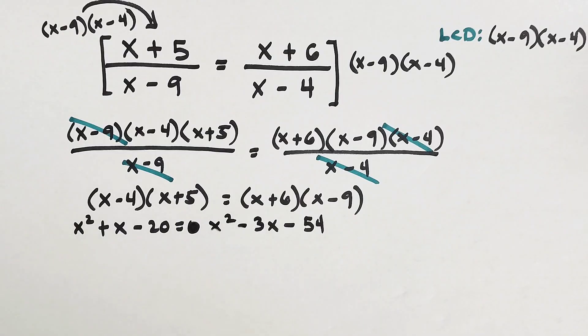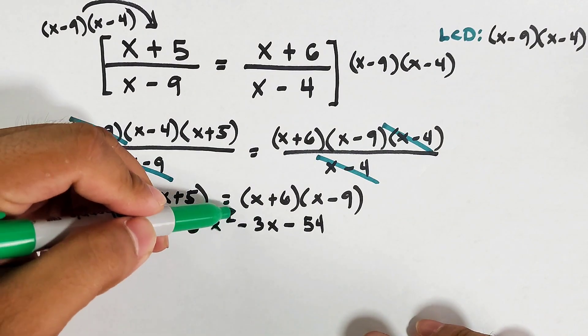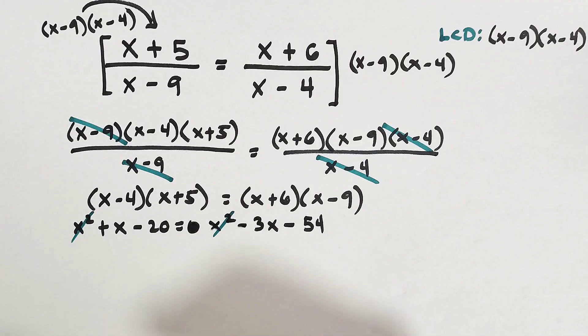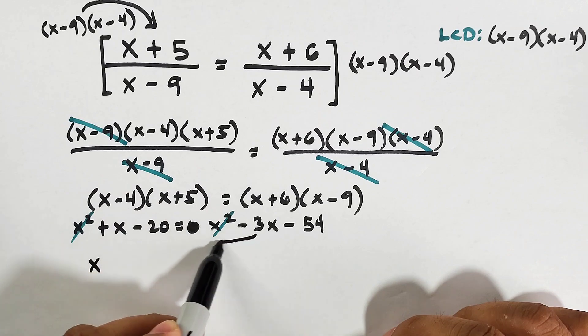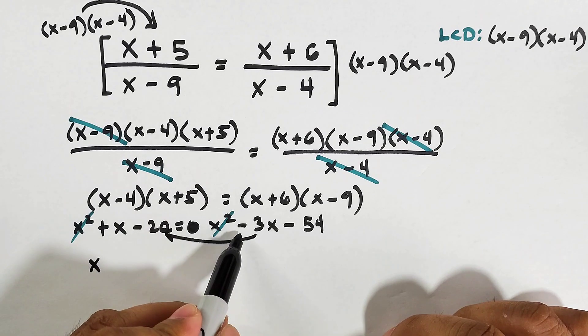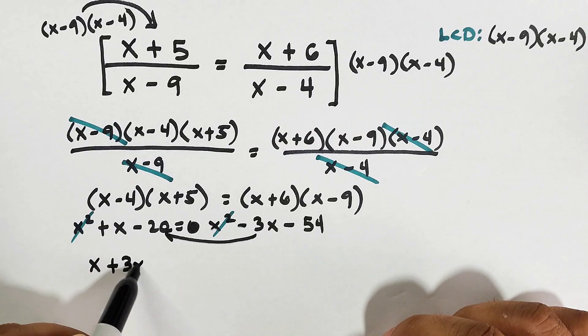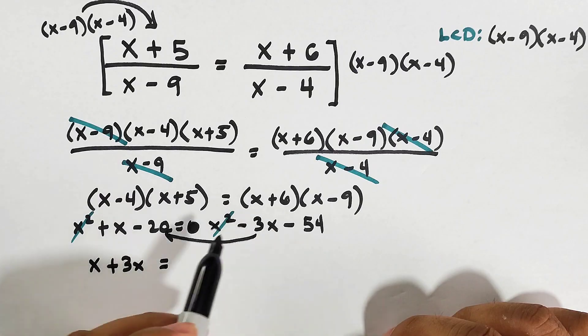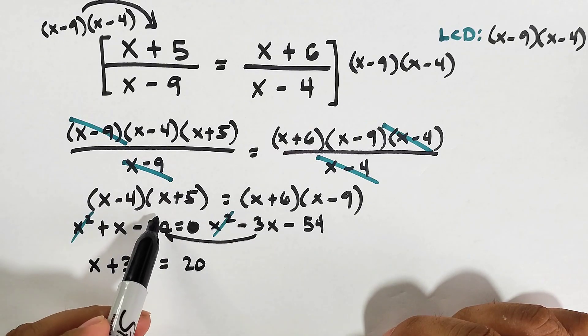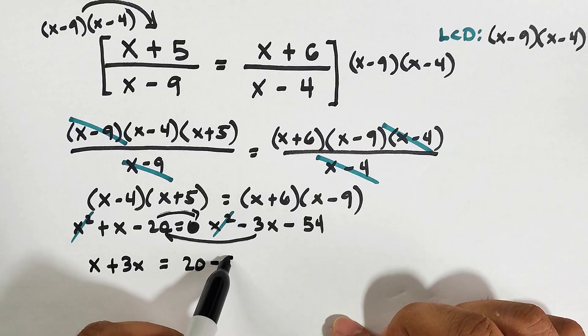As you can see, on both sides of the equation we have x squared and x squared. If we transpose one, it will become negative. So they will become 0. We can eliminate equal terms on both sides. Combine the remaining terms: x plus 3x equals 4x. Transpose negative 20 to become positive 20, then minus 54.